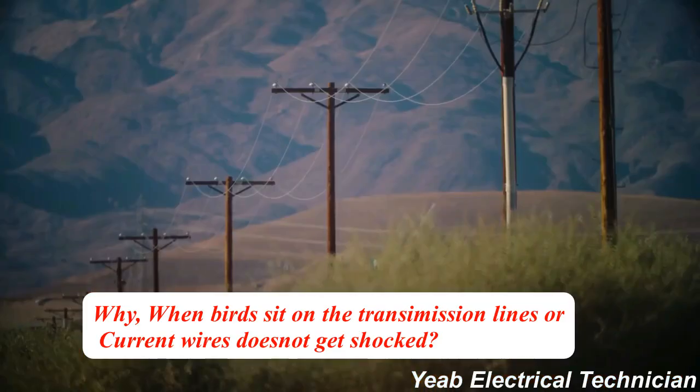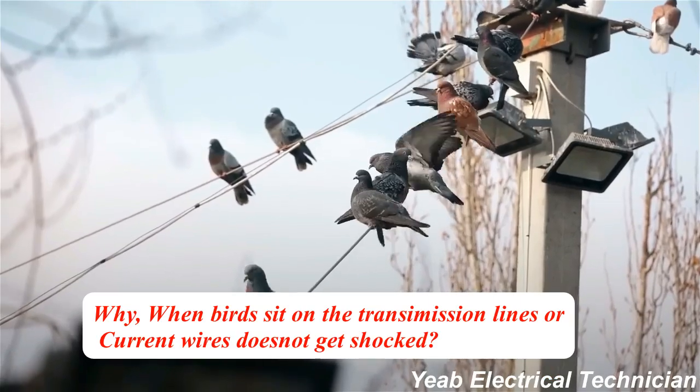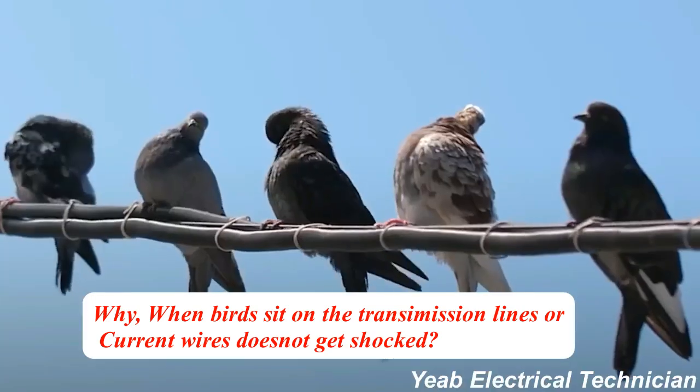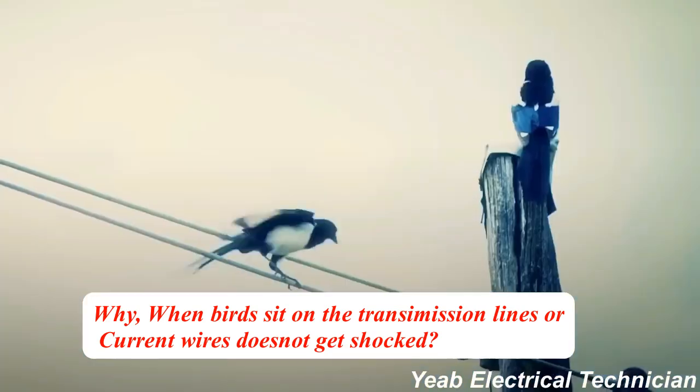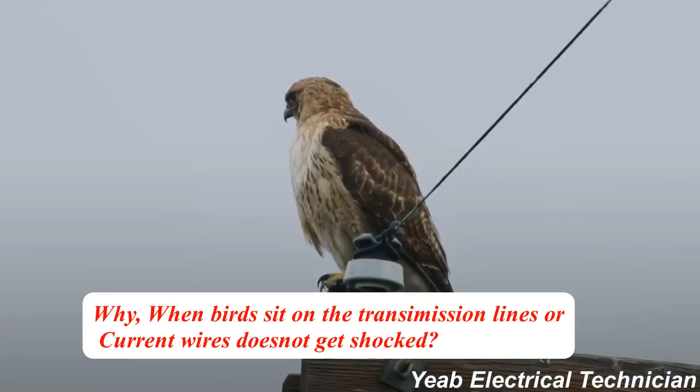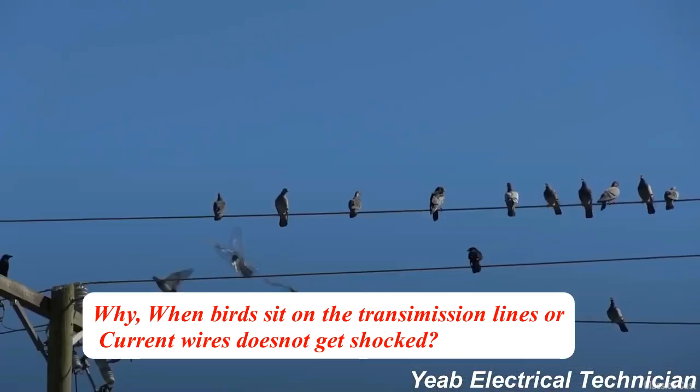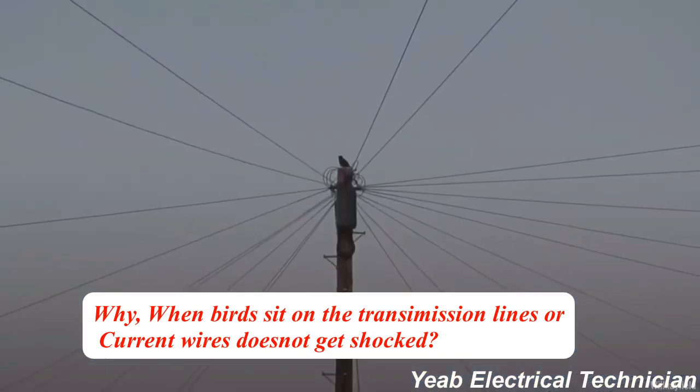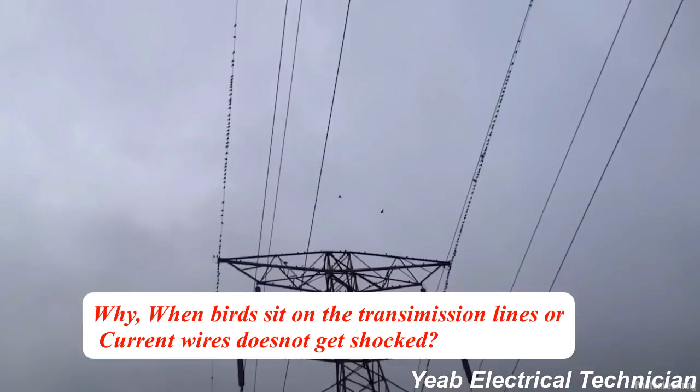The first question, the most frequently asked one, is why when birds sit on transmission lines or current wires, they don't get shocked. The answer is, it's true that if birds touch a single line, phase, or neutral, they don't get electrical shock. If birds touch two lines, then the circuit is closed and they get electrical shock.